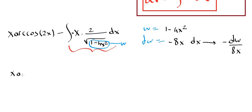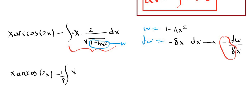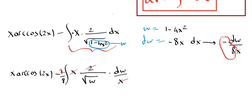So we have x times cosine of 2x minus the integral — we can pull negative 1/8 to the front. That makes: negative times negative is positive, times the remaining negative, so we keep negative 1/8. The integral becomes x times 2 over the square root of w, and instead of dx we write dw over x. The x's cancel, and we can pull the 2 to the front as well, giving us negative 1/4.